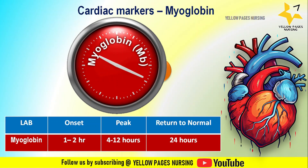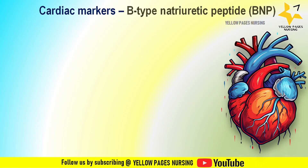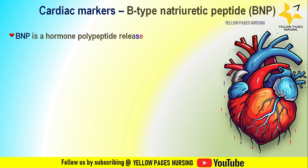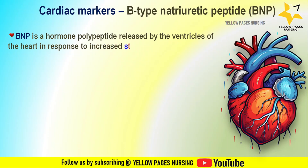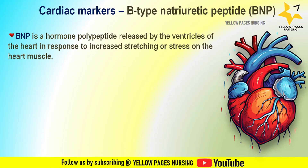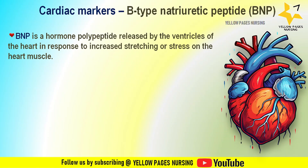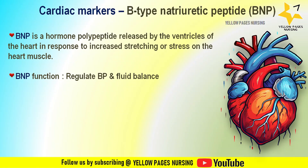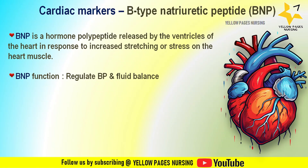BNP (B-type natriuretic peptide) is a hormone polypeptide released by the ventricles of the heart in response to increased stretching or stress on the heart muscle. The main function of BNP is to help regulate blood pressure and fluid balance by promoting vasodilation and diuresis.